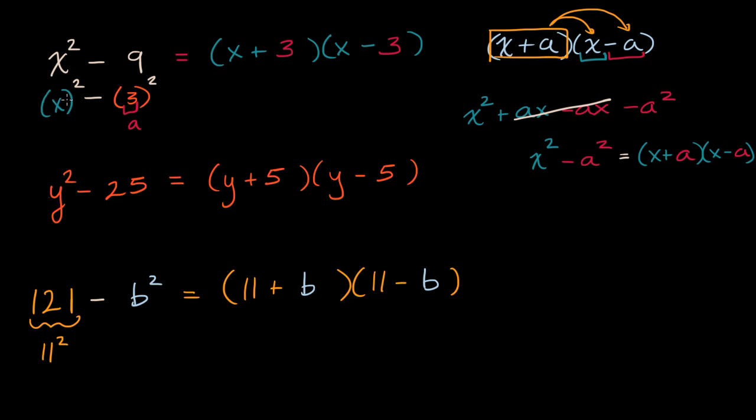So in general, if you see a difference of squares - one square being subtracted from another - it could be a numeric perfect square or a variable that has been squared. Then you can say that's just the first thing squared plus the second thing squared, times the first thing squared minus the second thing squared.